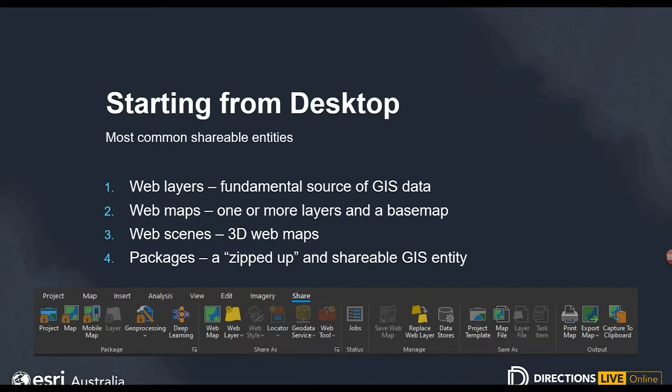Web scenes are web maps, but in 3D — providing an interactive display of geographic information in 3D for both visualization and analysis. Finally, packages are compressed files containing GIS data, great for sharing via email, FTP, or thumb drives, and can also be shared as items to the ArcGIS Online cloud. The kinds of entities that can be packaged include project packages, map packages, layer, tile or vector tile packages, scene layer packages, and more. A link to all the different shareable packages is included in the reference section.